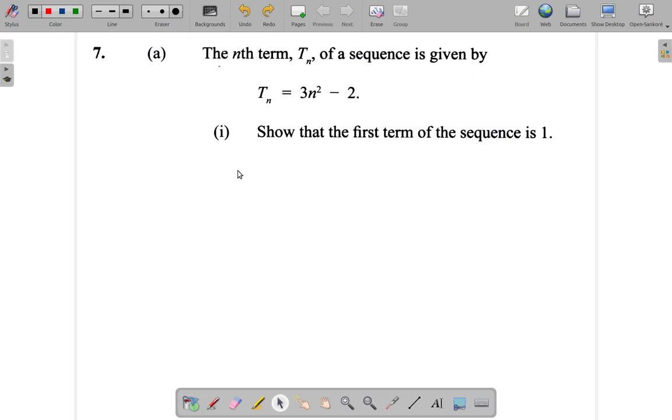The nth term Tn of a sequence is given by Tn = 3n² - 2. Show that the first term of the sequence is 1.